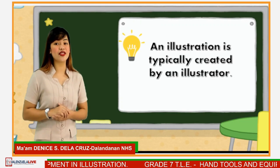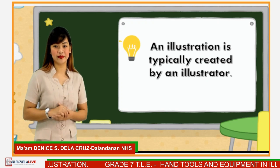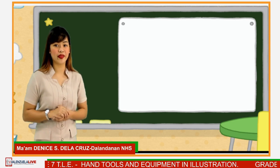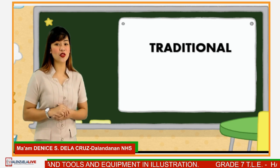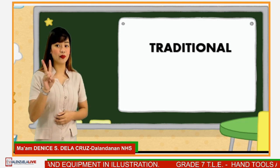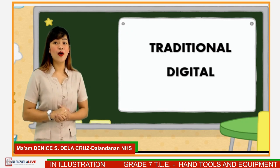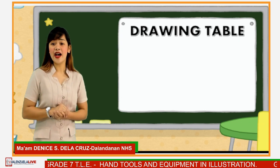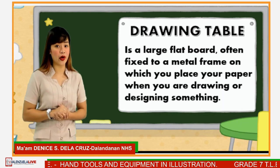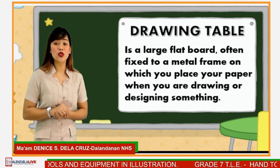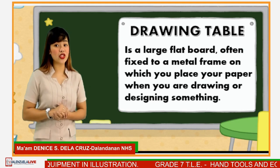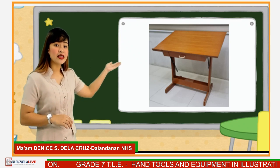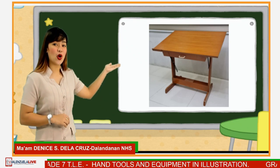An illustration is typically created by an illustrator. Hand tools and equipment in illustration can be categorized into two: the traditional and digital. For the traditional, we have the drafting or drawing table. A drafting table is a large flat board often fixed to a metal frame so that it looks like a desk, on which you place your paper when you are drawing or designing something.